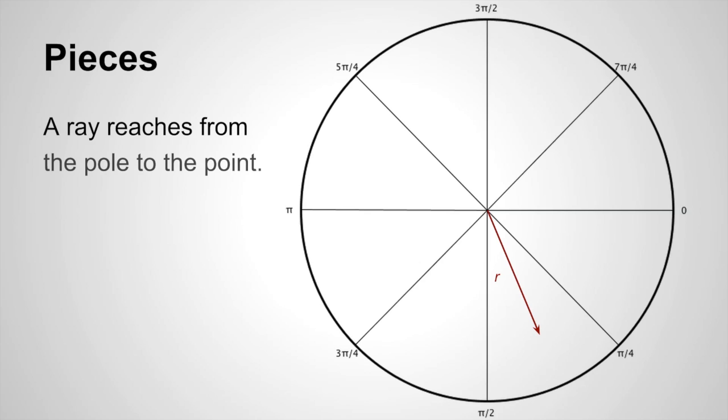If you imagine that this point right at the end of the arrow is the point we're trying to get the coordinates for, our ray begins at the pole and extends outward to that point.